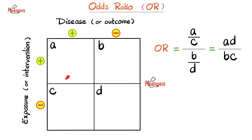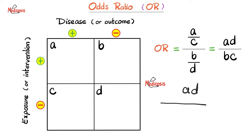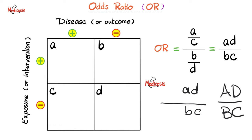To find the odds ratio, divide A over C, all divided by B over D — so the numerator contains sick people and the denominator contains people who are not sick. A and B are exposed; C and D were not exposed. From basic mathematics, the denominator of the denominator becomes a numerator, so D moves upstairs next to A, and C moves downstairs with B. The odds ratio equals AD over BC — not BC over AD.